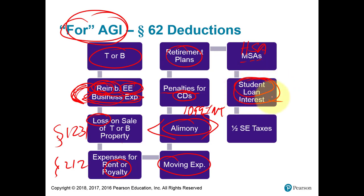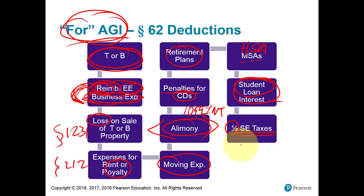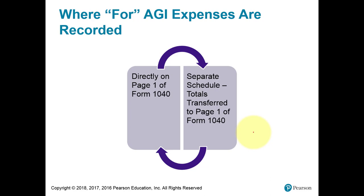A person with a trade or business as a sole proprietorship, partnership, or LLC has profits subject to income tax and also self-employment tax — the Social Security tax. Because their self-employment tax is so large, the government allows a deduction: a for-AGI deduction of half of that tax. Let's take a look at the 1040 form.